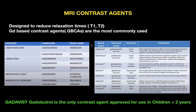MRI contrast agents: MRI provides excellent soft tissue contrast. Contrast agents are pharmaceuticals that enhance contrast between lesion and normal structure, increasing diagnostic accuracy. Different categories include linear non-ionic, linear ionic, macrocyclic ionic, and macrocyclic non-ionic. Gadobutrol is the most commonly used and falls in the macrocyclic non-ionic category.